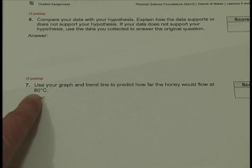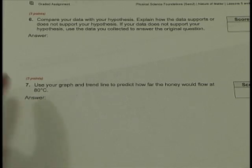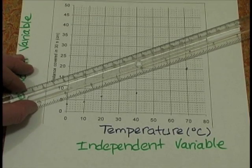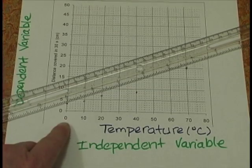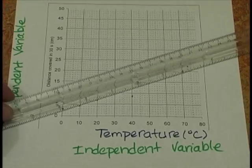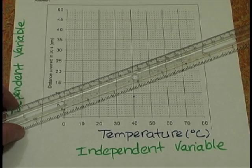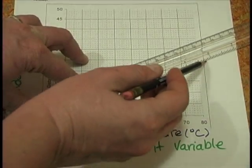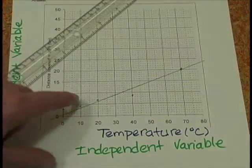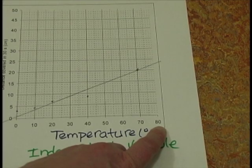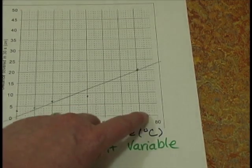Question 7 in the lab says: use your graph and trend line to predict how far the corn syrup would flow at 80 degrees centigrade. With my ruler, I'm going to try to decide about the average of where the points are going as they go from 0 degrees to 70 degrees. I don't just connect the dots — I put my ruler equal distances from each point. Mathematically, if you have a program like Excel do it, it will calculate the least distance from each point to the line, making a good prediction for data at 80 degrees centigrade, which would be kind of dangerous in our case.